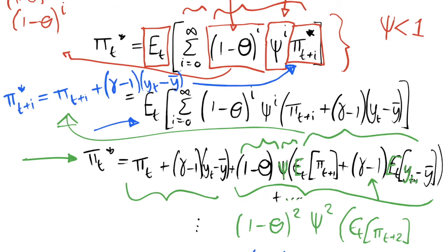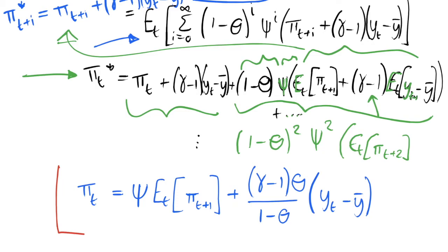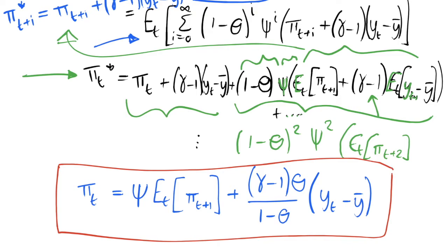I will not go through all the tedious algebra and rearranging needed to get this in a recognisable Phillips curve form — it requires taking a number of expectations. The intention of this video is just to give the intuition behind where this comes from, the assumptions made, and how it's derived. So I'll just write down the new Keynesian Phillips curve derived using the Calvo-Fairy method.